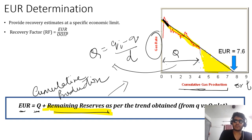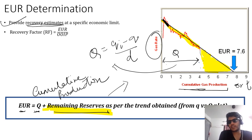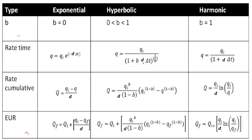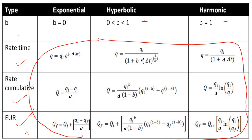The significance of EUR is that it is used to estimate recovery at a specific economic limit. Recovery factor is the ratio of EUR versus initial reserves. Similarly, for exponential decline we can derive the rate, cumulative, and EUR for hyperbolic and harmonic also. These are important equations in GATE examination that you will be applying directly while solving numericals.